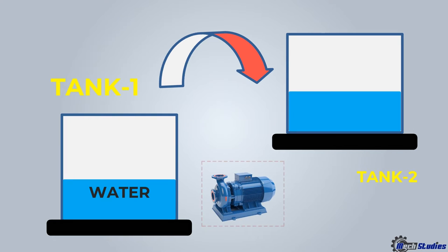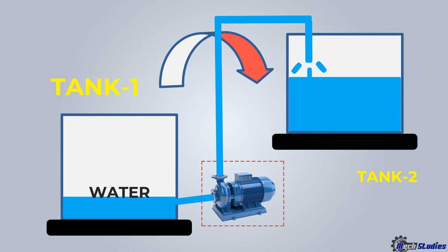The pump helps to transfer fluid from a lower elevation to a higher elevation. The pump sucks the water from the tank 1 through a pipe and does some work on the water. After that, water is discharged from the pump and transferred through a pipe to the tank 2. Finally, water is transferred from a tank kept at a lower elevation to another tank kept at a higher elevation.